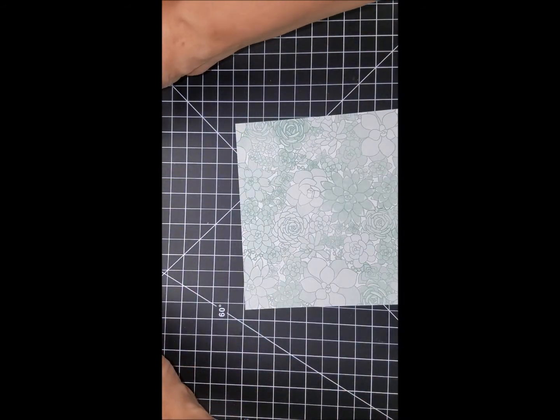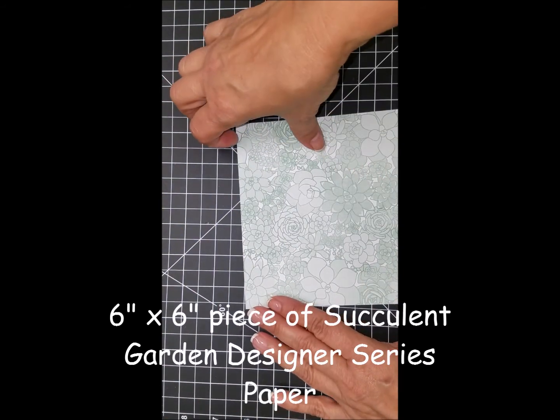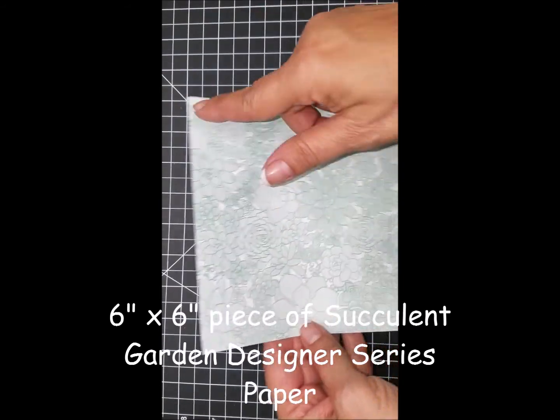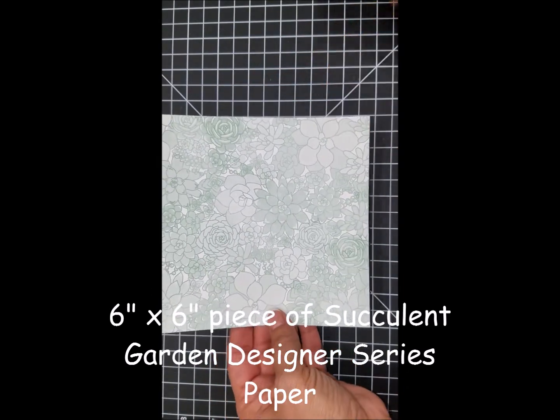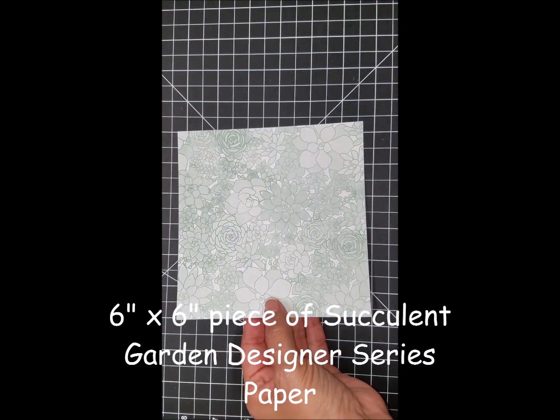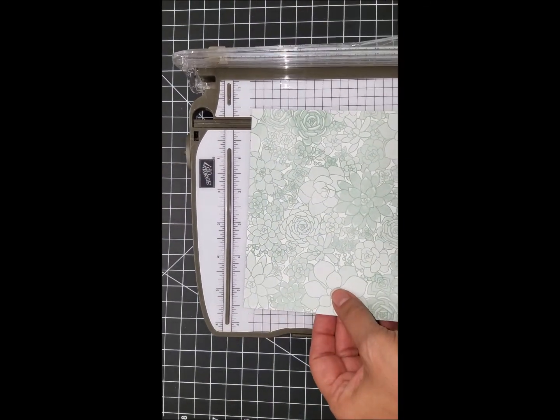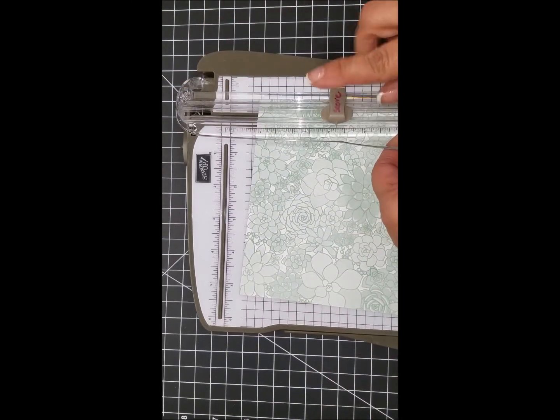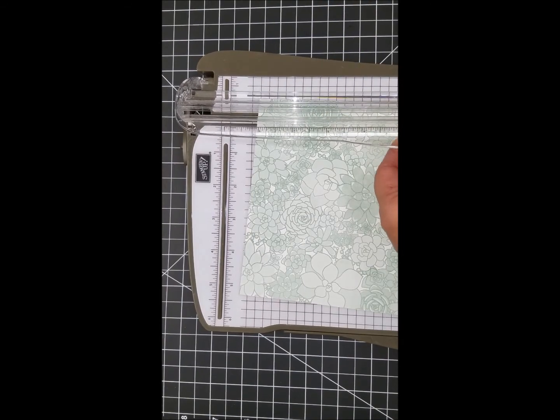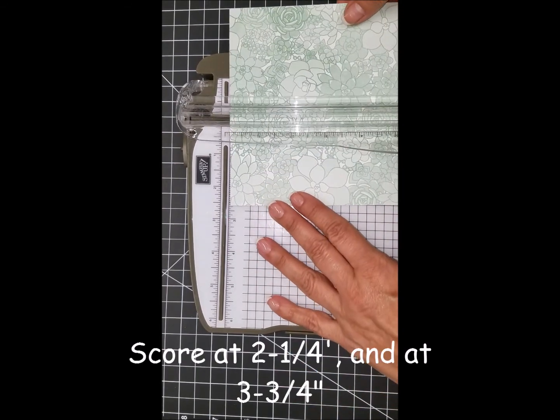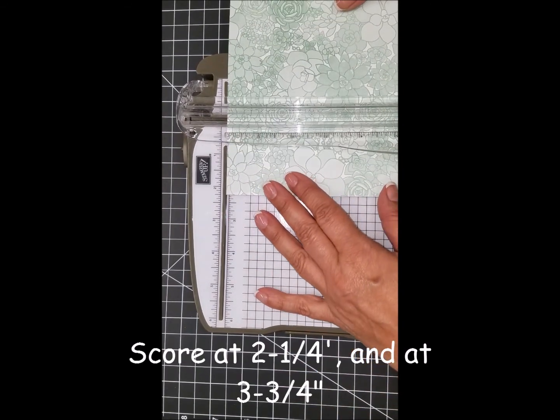We're going to need a piece of six by six designer series paper. Here I'm using the succulent garden designer series paper from the 2017 occasions catalog found on page 21. We're going to begin by scoring using our stamp and trimmer, and we're going to score at two and one quarter.